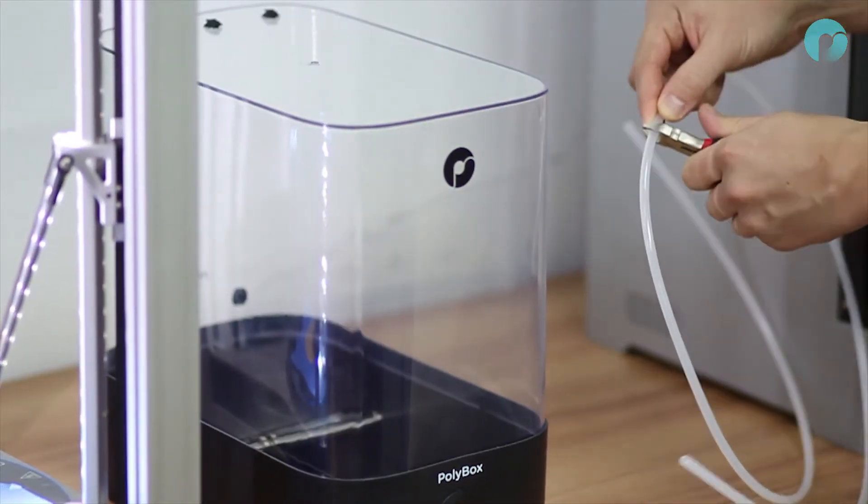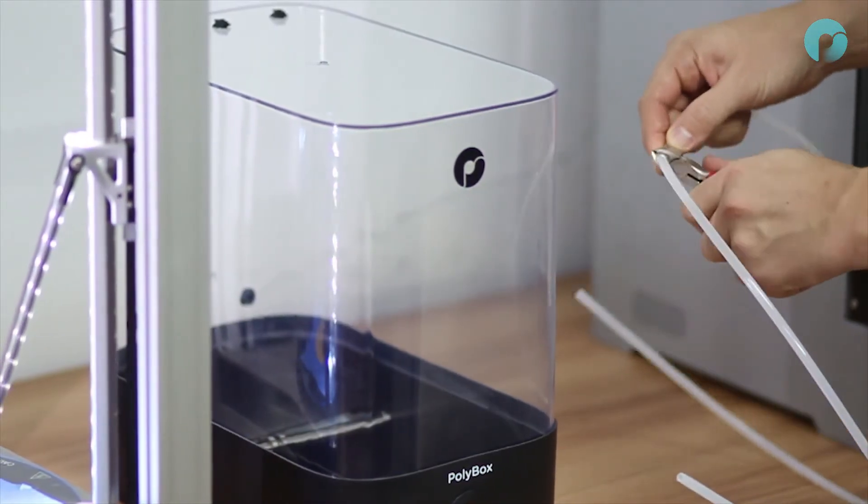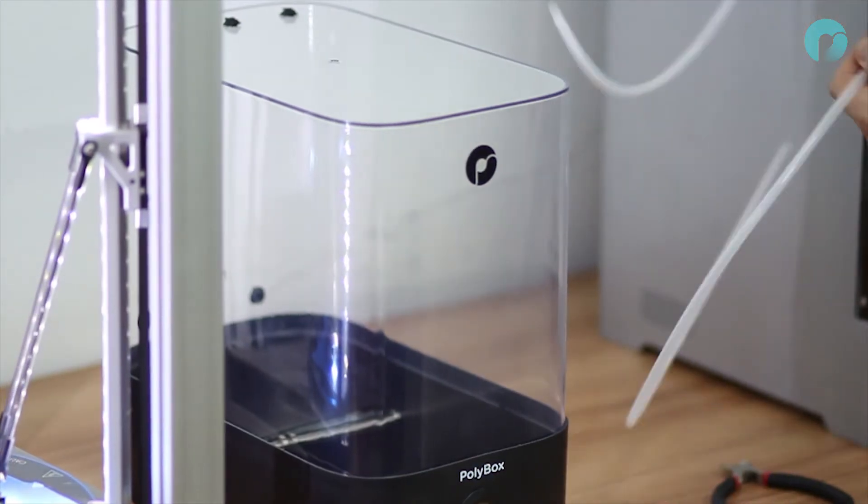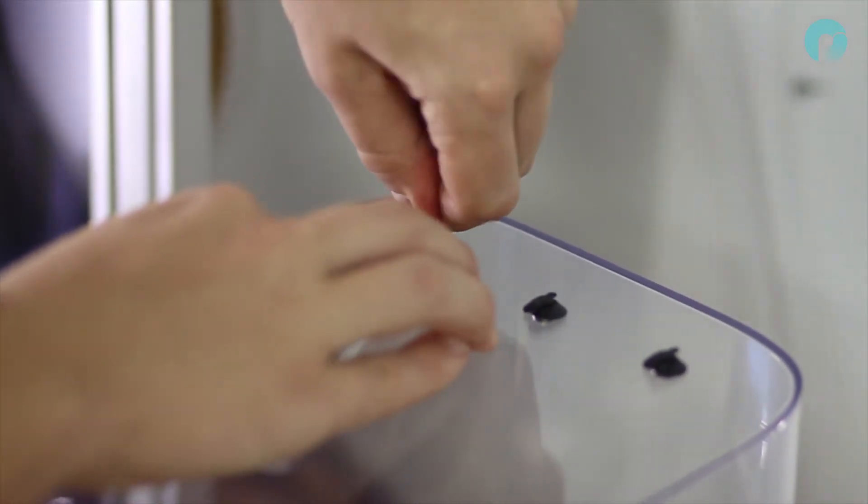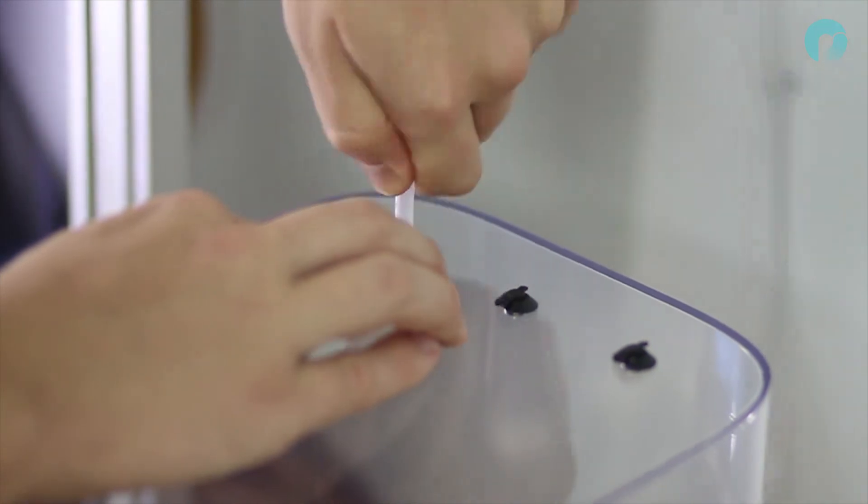You can then cut the filament guide tube to match your setup. If you are running dual extrusion or multi-color prints, insert the guide tubes in the outer holes. The middle hole is for 3kg spools.